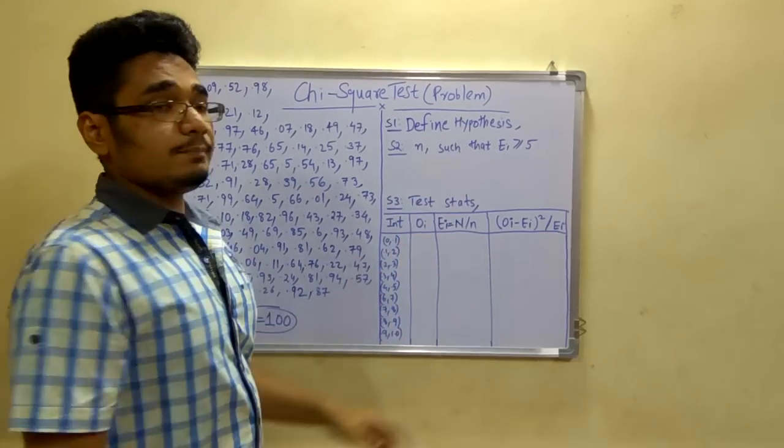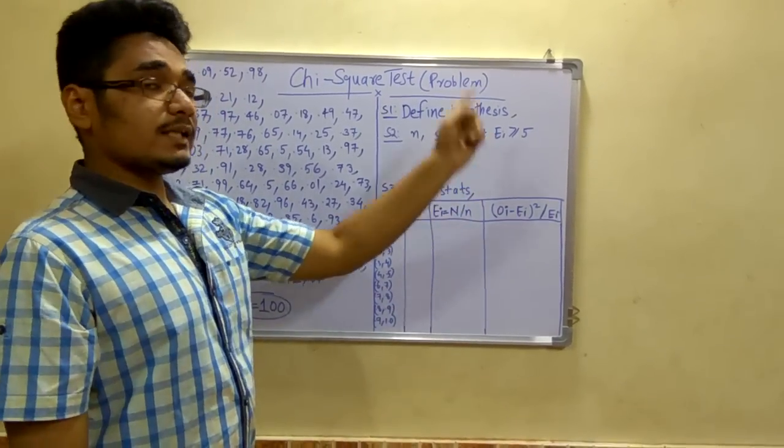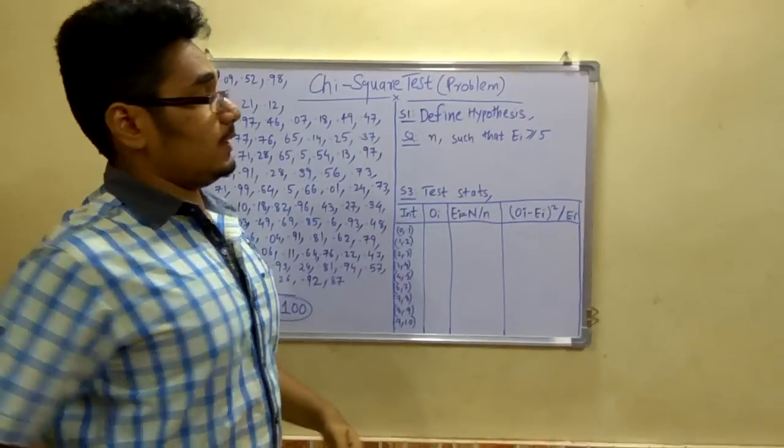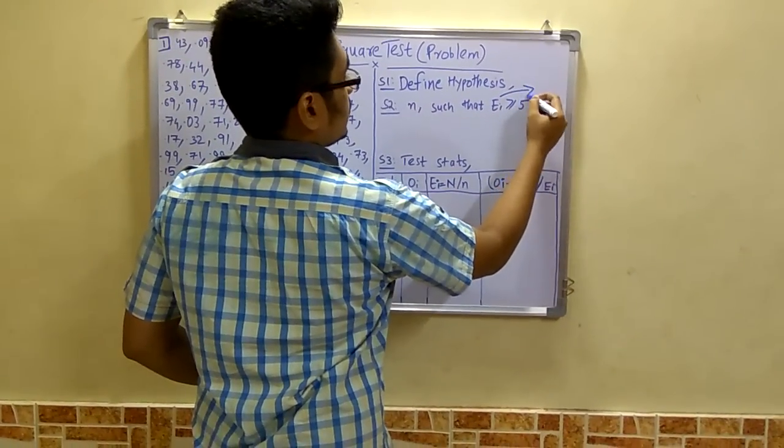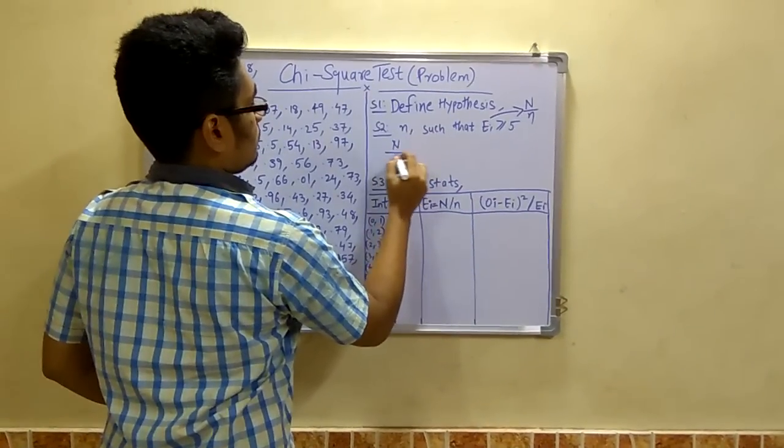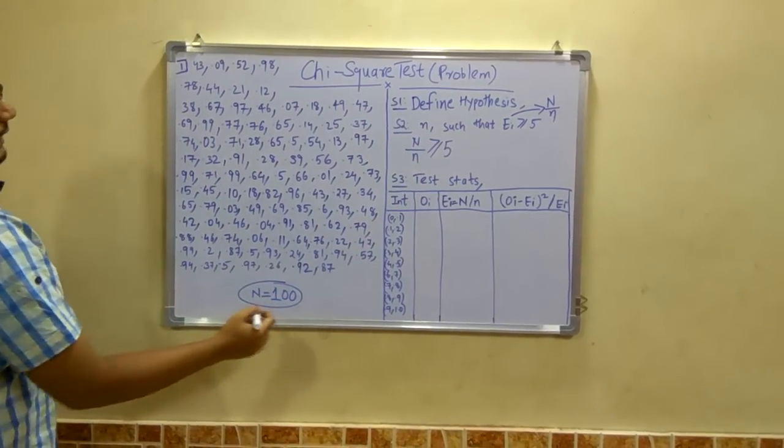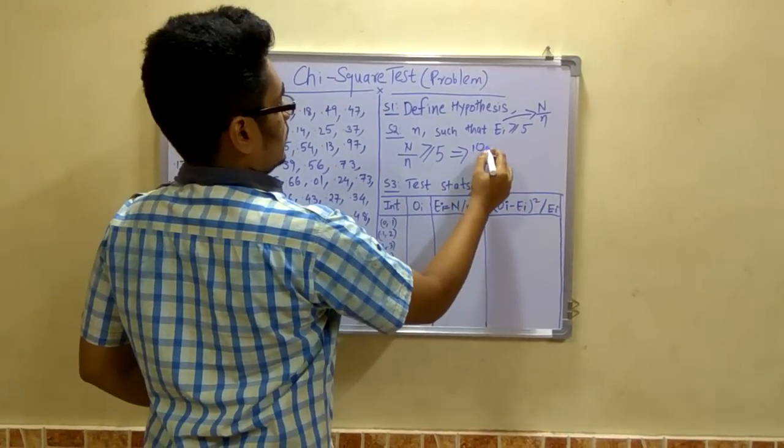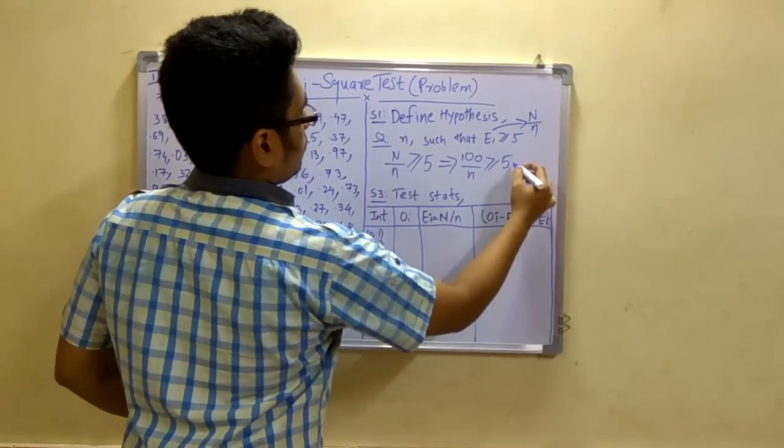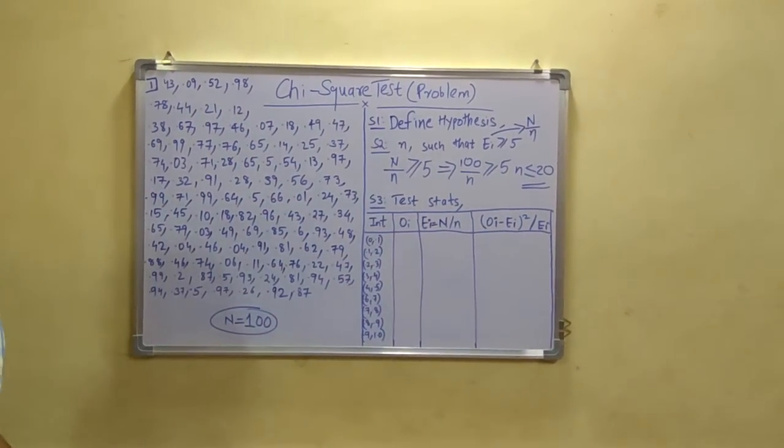Now second step is to choose this small n such that this ei, that is the expected frequency, should be greater than or equal to 5. Now how to estimate this value of small n? This ei is given as capital N upon small n. Now in place of ei you substitute capital N upon small n greater than equal to 5. You can have the value of N from here, that is 100. So this implies that 100 upon n is greater than or equal to 5. Bring this 5 down here, so n will be less than or equal to 20. We get n as 20, that is n is less than or equal to 20.